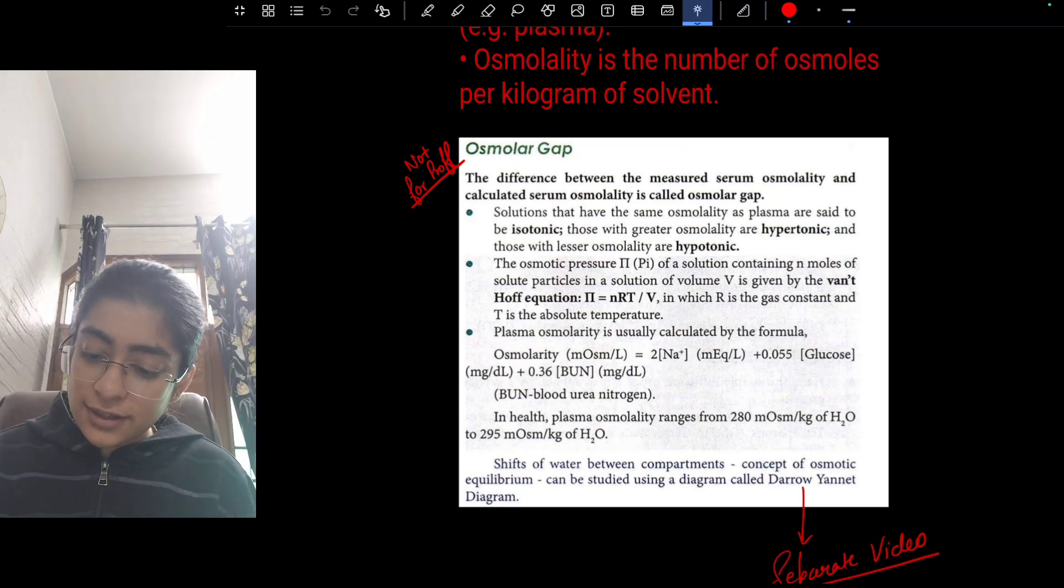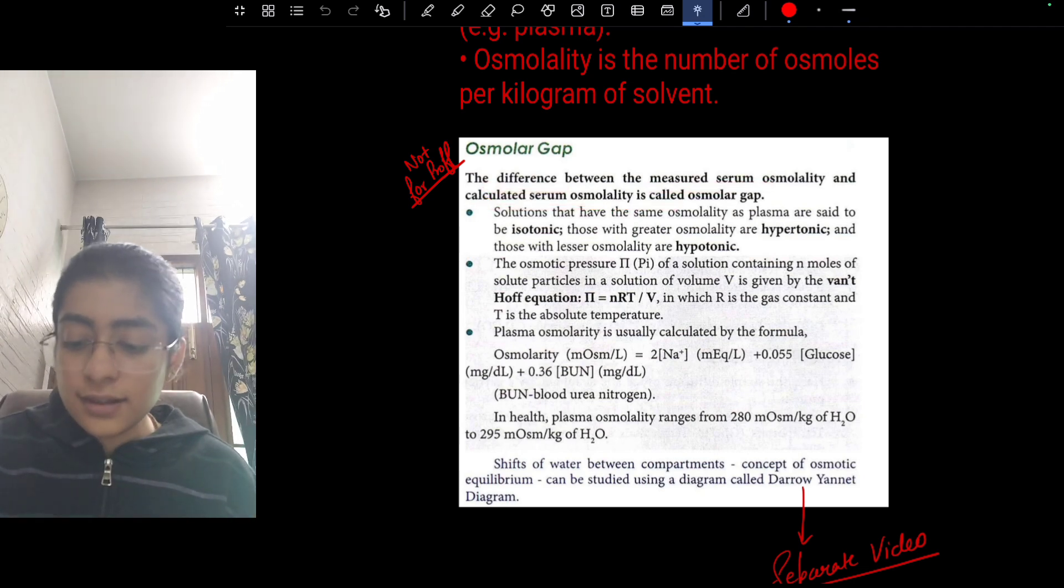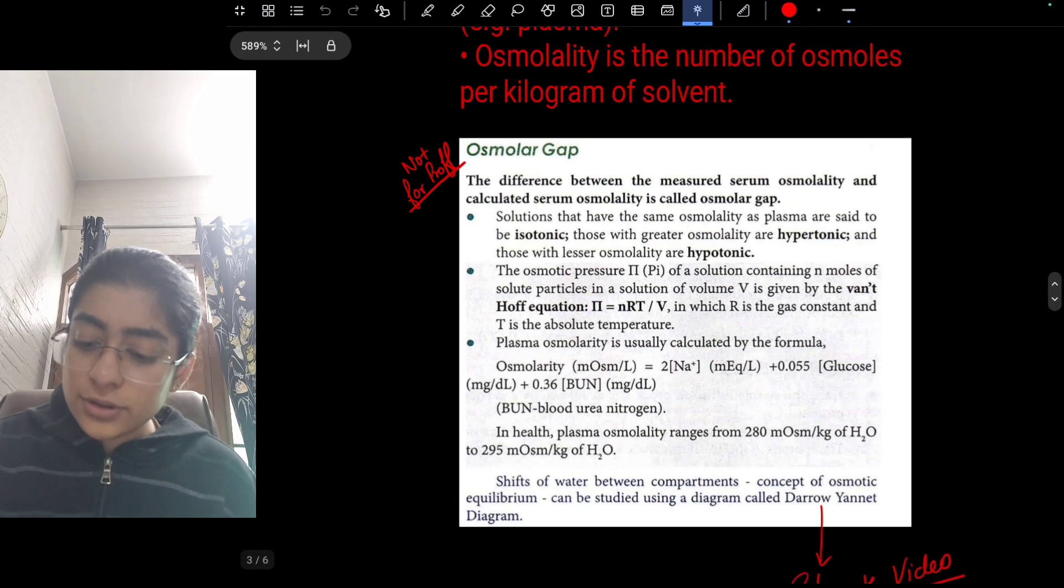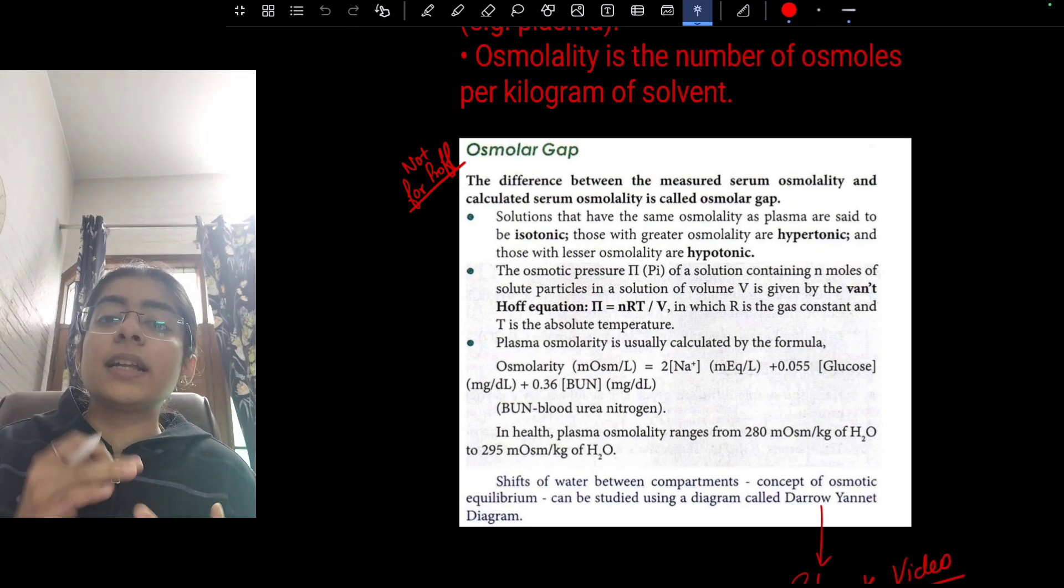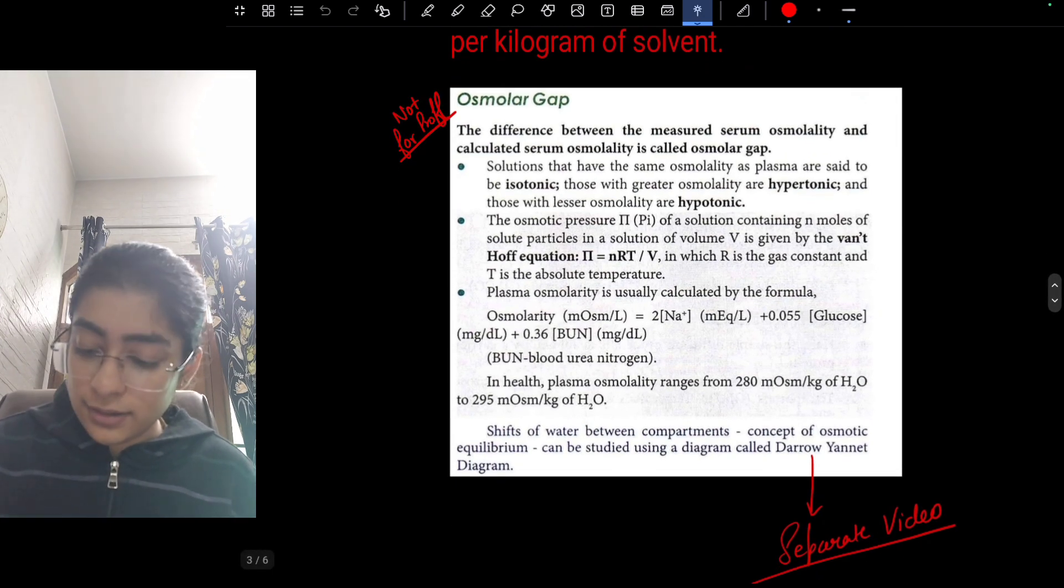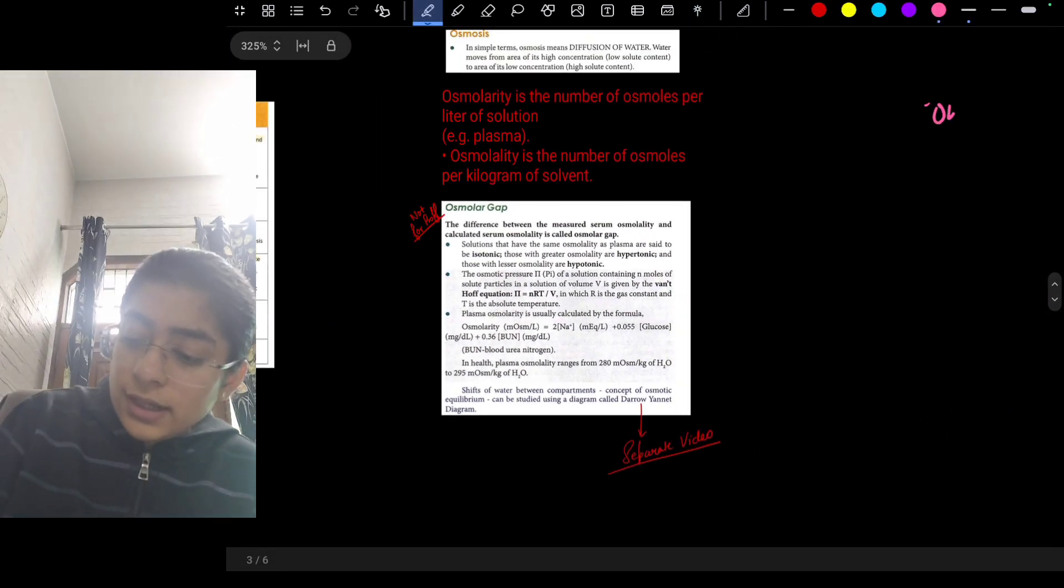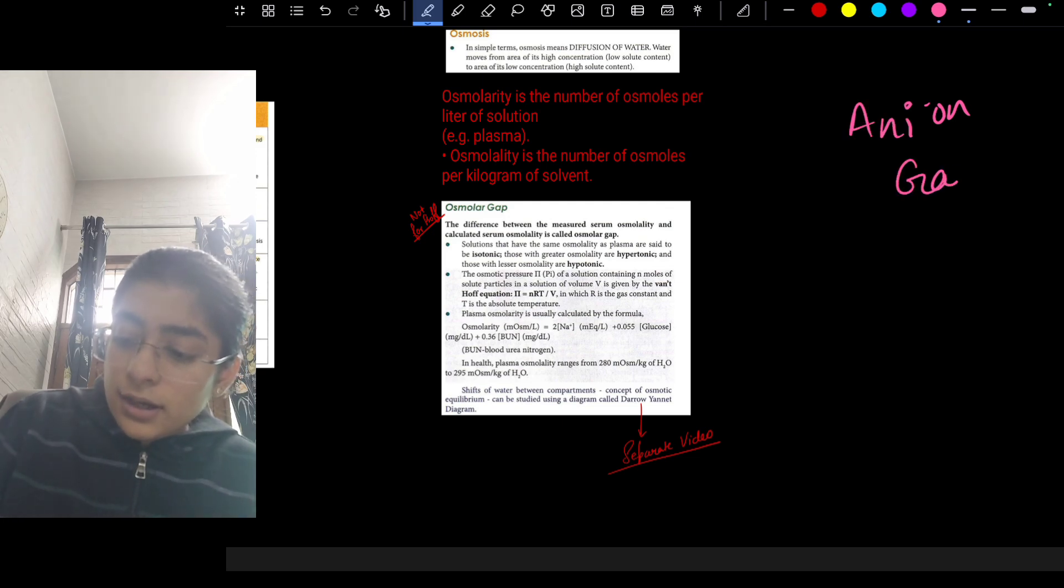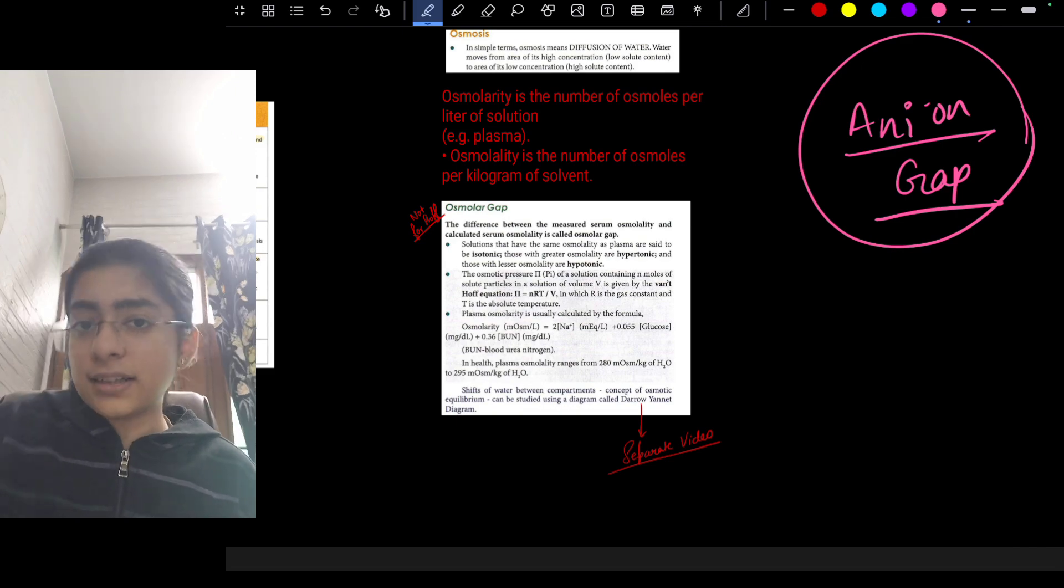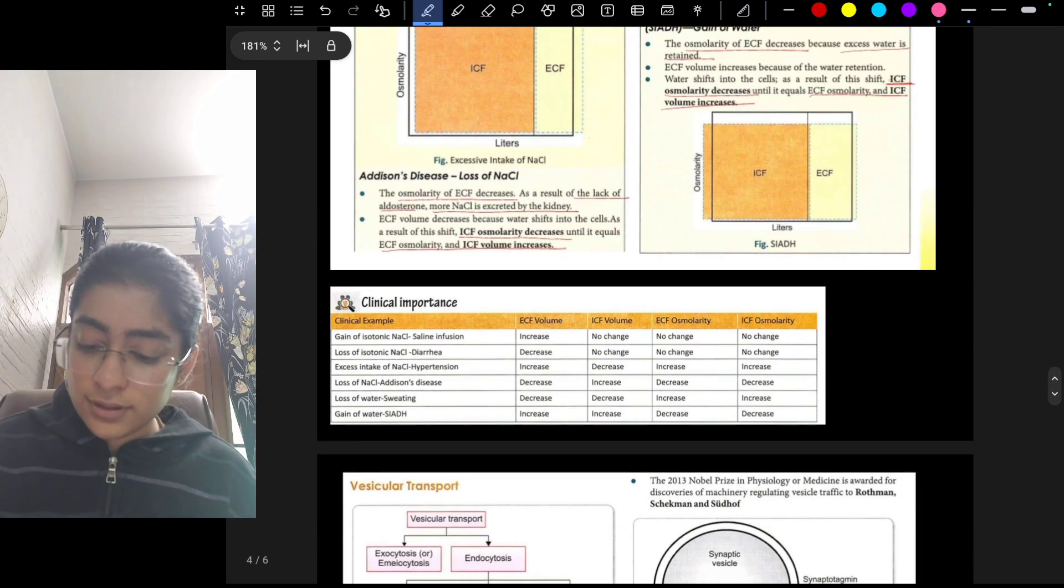Osmolar gap: it is not for prof exams but you can refer to it. It is the difference between the measured serum osmolality and calculated serum osmolality which is called the osmolar gap. Solutions: we can refer to it when we are having isotonic, hypotonic, and hypertonic solutions and how it is calculated. Osmotic pressure: it is Van't Hoff equation, that is pi equals nRT by V. This is all very easy. An extra point which I would like to tell you is the anion gap. I would request you to study it from biochemistry. If it is asked in physiology it will help you as well. Darrow Yannet diagram: we don't need it for the prof exam.